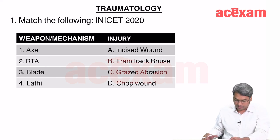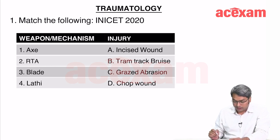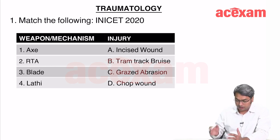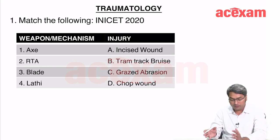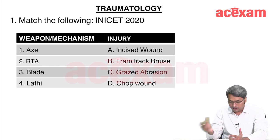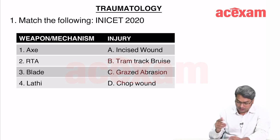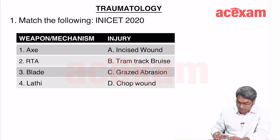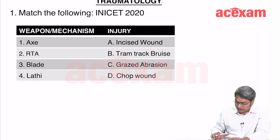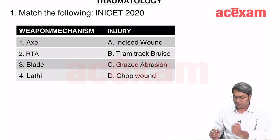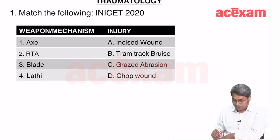The first question — match the following — came in INICET 2020. One column listed weapons or mechanisms: axe, RTA, blade, and lathe. The other column listed injuries: incised wound, tram track bruise, grazed abrasion, and chop wound.